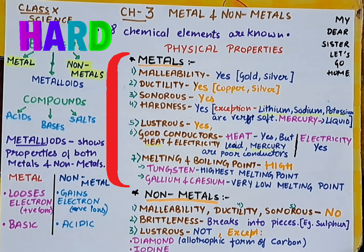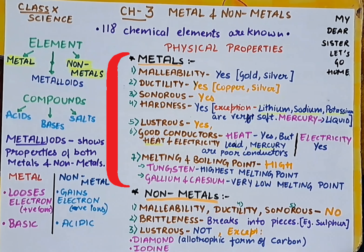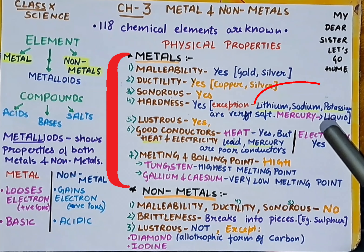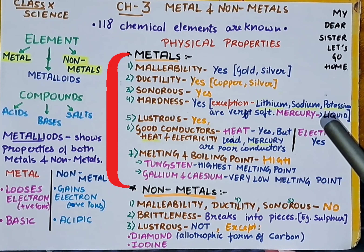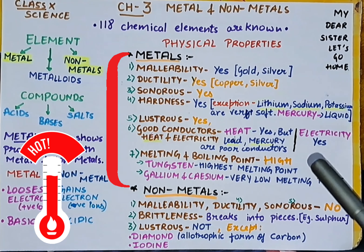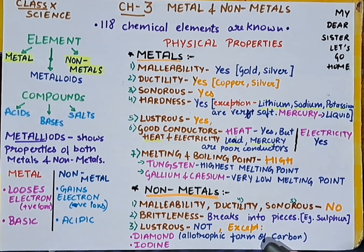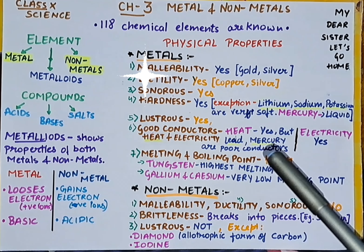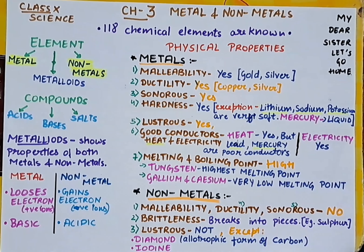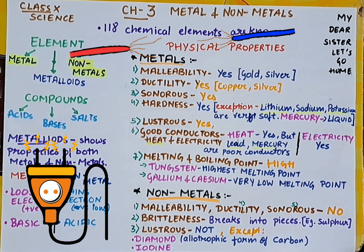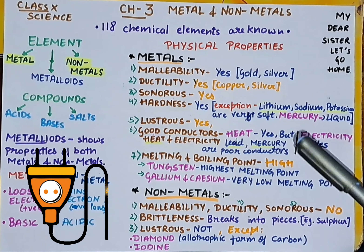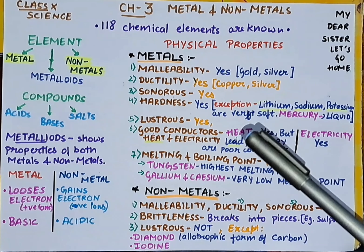Talking about hardness: metals are very hard, with the exception that lithium, sodium, and potassium are soft metals that can even be cut with a knife. Mercury is the only metal found in liquid state at room temperature. Non-metals are lustrous — they give a shining appearance. Metals are good conductors of electricity.